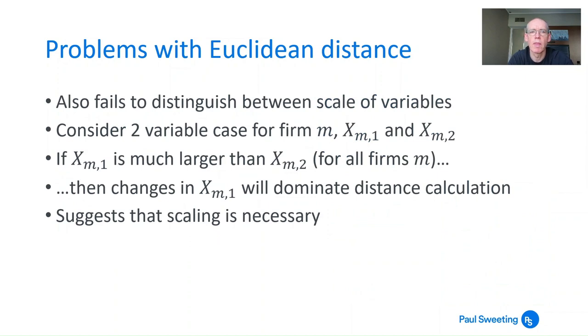You've also got the fact that it fails to distinguish between the scale of the variables. Say you've got the two-variable case for firm m where they're xm1 and xm2. If xm1 is much larger than xm2 for all of the different firms—say you've got one measure where the average is one and another measure where the average is a hundred—changes in the thing where the average measure is 100 will dominate the distance calculation. It's a bit like having a right-angle triangle where one side is much bigger than the other: the size of the hypotenuse is going to be dominated by what happens with that bigger side. So some sort of scaling is probably necessary to adjust Euclidean distance.